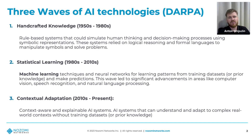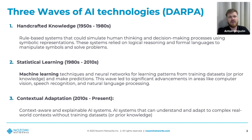I would like to present them in historical waves. According to DARPA, there have been three main waves. The first one is handcrafted knowledge — rule-based expert systems that could simulate human thinking and decision-making processes using symbolic representation.